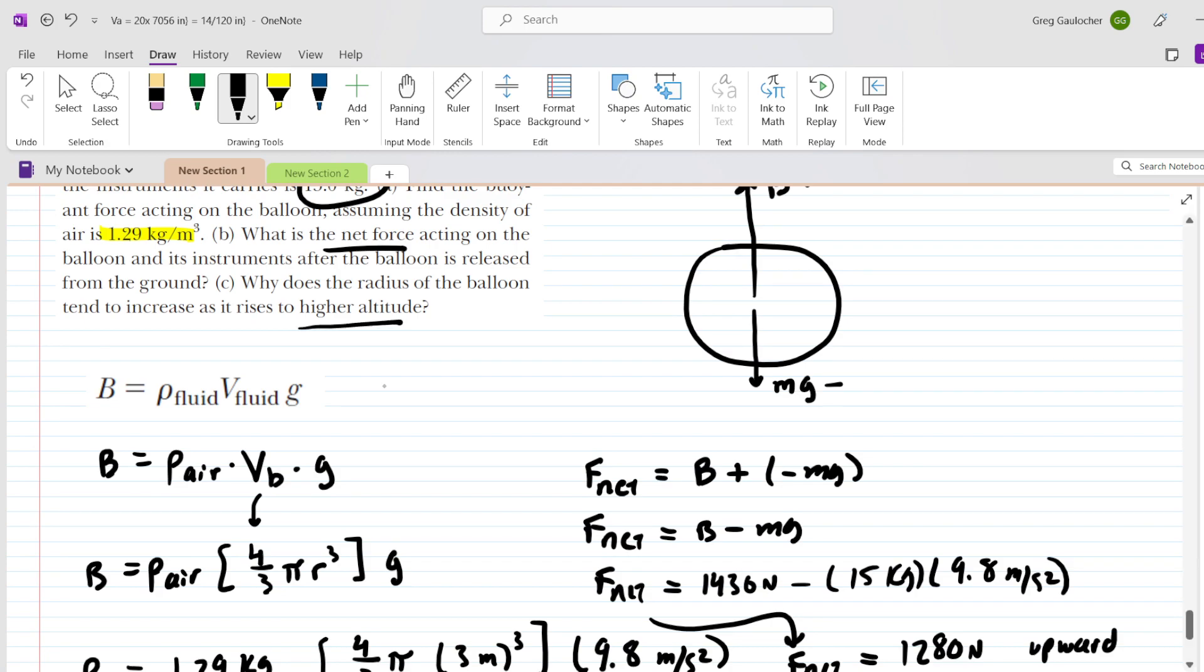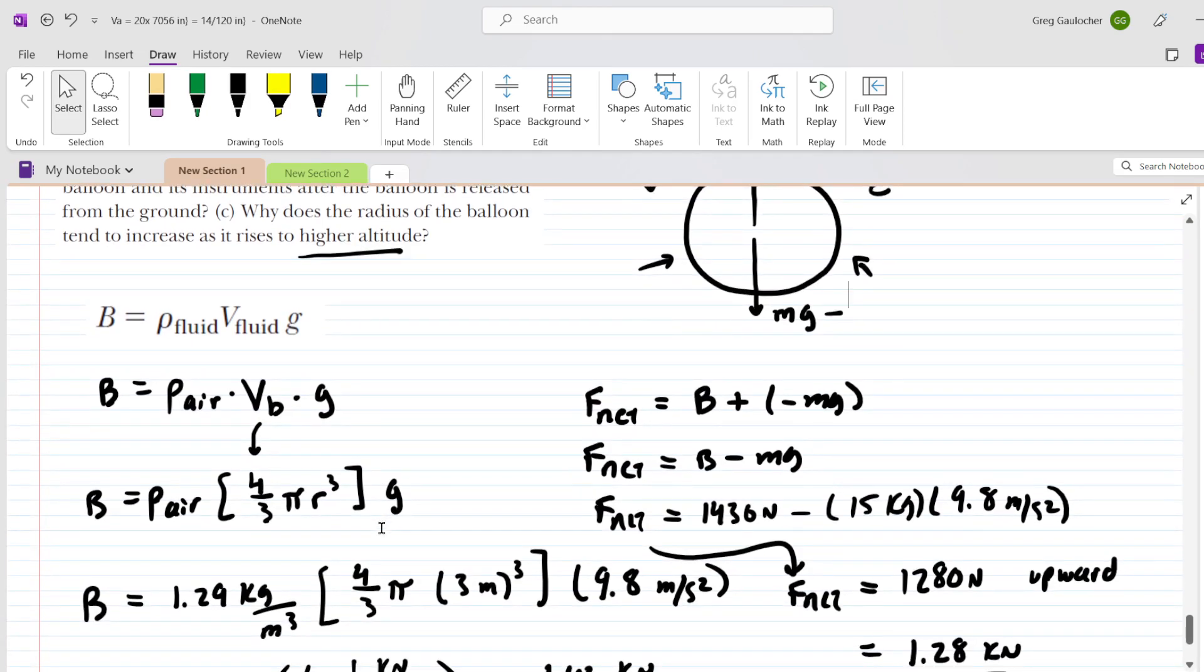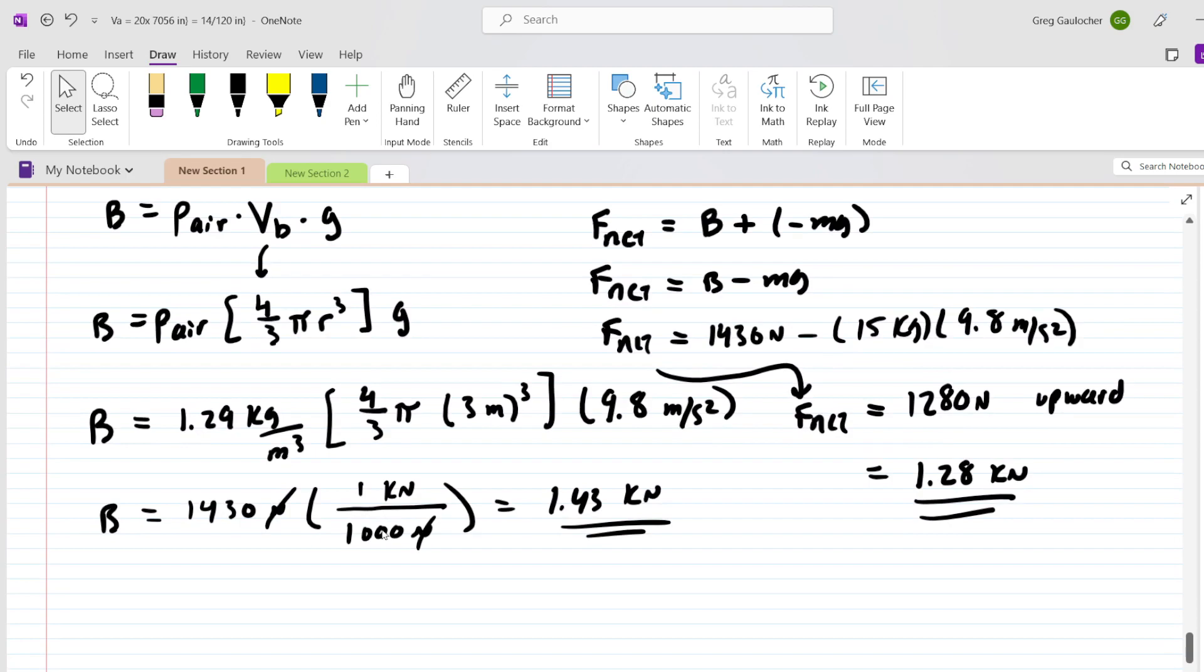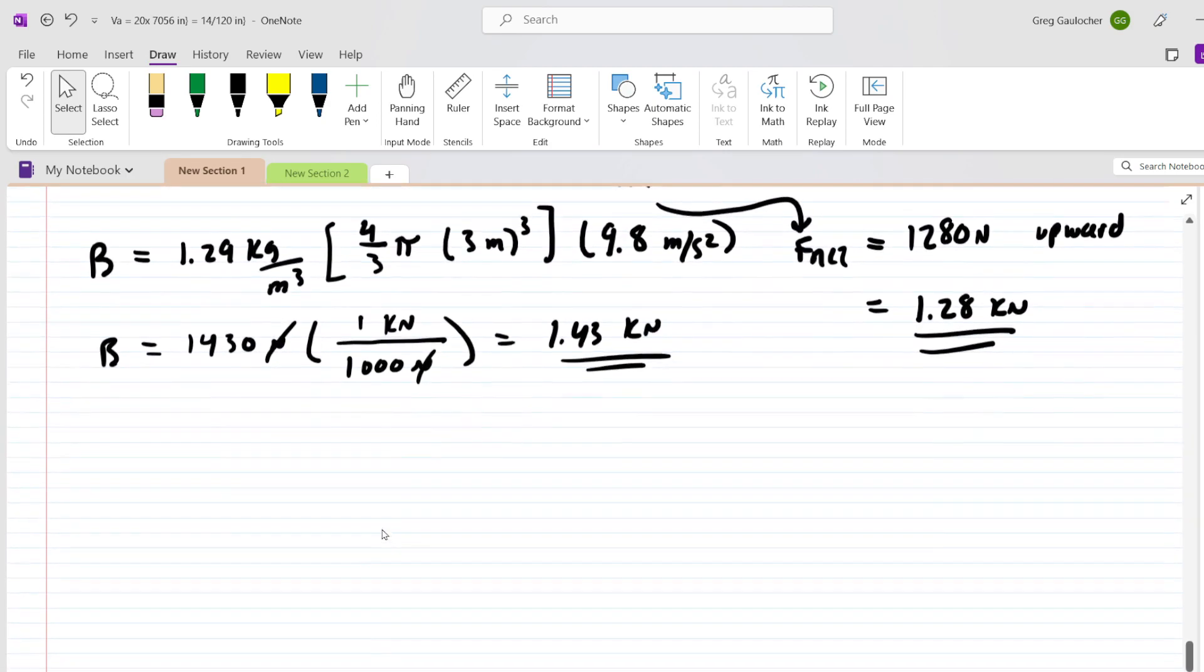Ask yourself, what happens to the atmospheric pressure that's exerted on the balloon from the outside as the altitude increases? Well, we probably all know that as altitude increases, the pressure exerted on the balloon decreases. So since the atmospheric pressure decreases, the balloon can expand outward and thereby increase its radius.